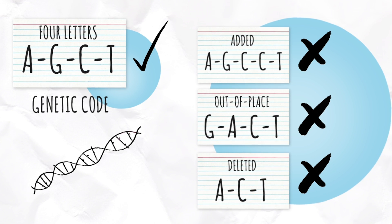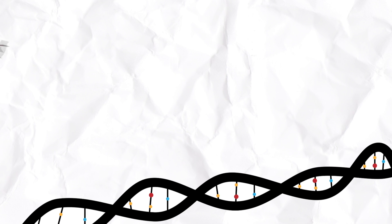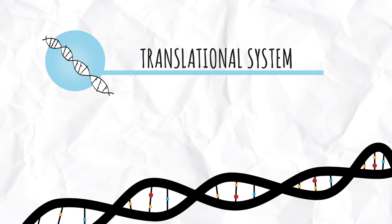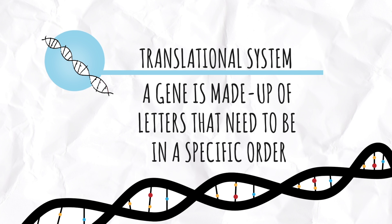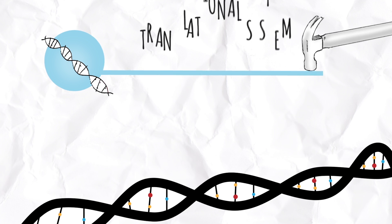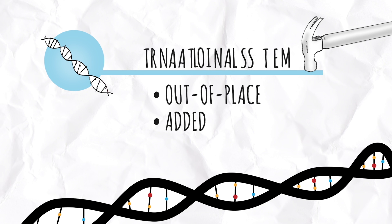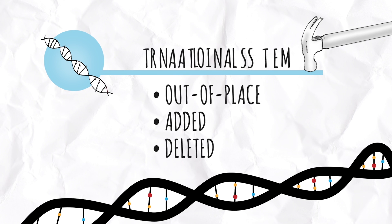Our genetic code works along a very similar translational system. A gene is made up of letters that need to be in a specific order for healthy proteins to be made. If a letter is out of place, added, or deleted, it too may not be understood by the human body. We call this a genetic alteration or mutation.